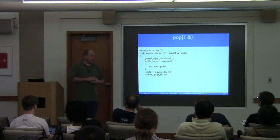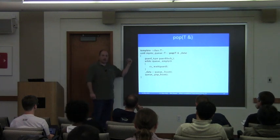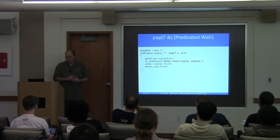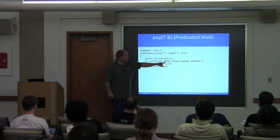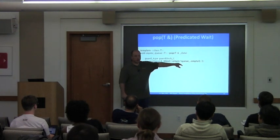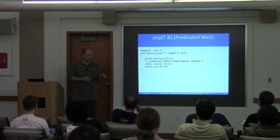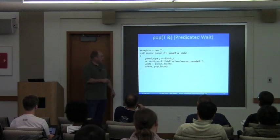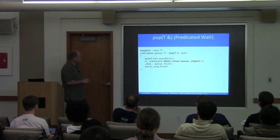We're returning through an output parameter rather than by value because of exception safety — the copy or move constructor could throw, making it non-exception-safe if we'd already removed the element. The predicated wait using a lambda captures 'this' to reference the data member queue. The predicate behavior is: while the predicate is not satisfied, wait — so the condition is negated compared to the explicit while loop version.